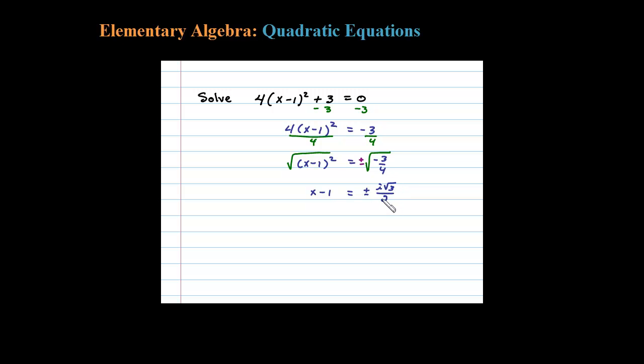And the square root of 4 is 2. Adding 1, we're left with X equals 1 plus or minus i times the square root of 3 over 2. Now you want to make that look like a complex number.